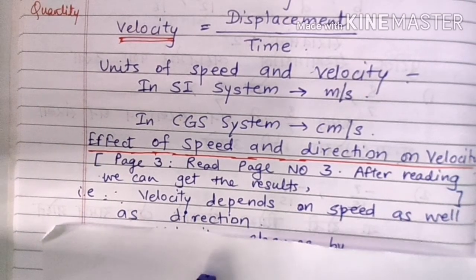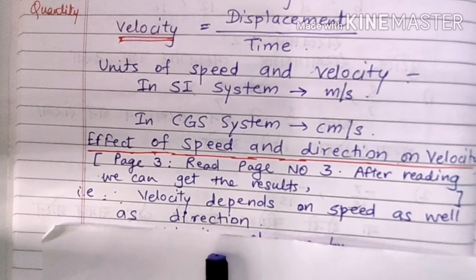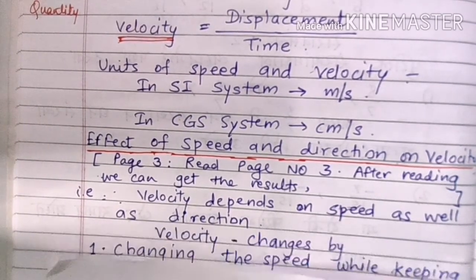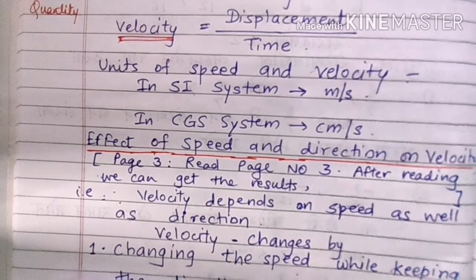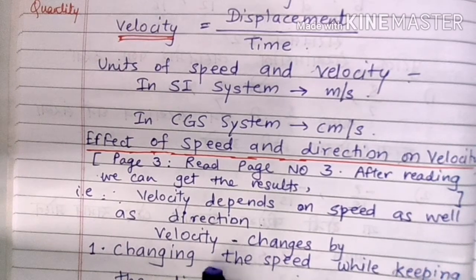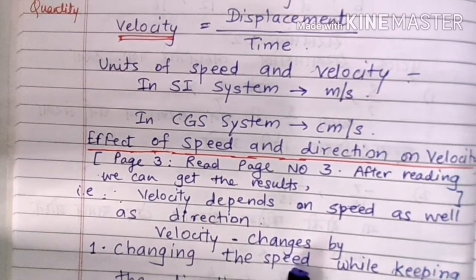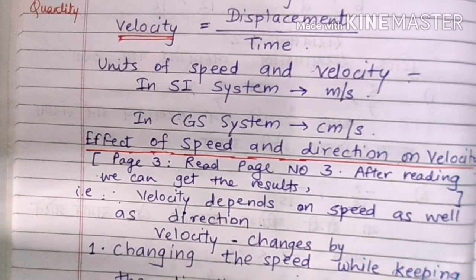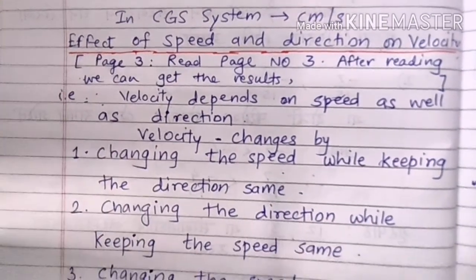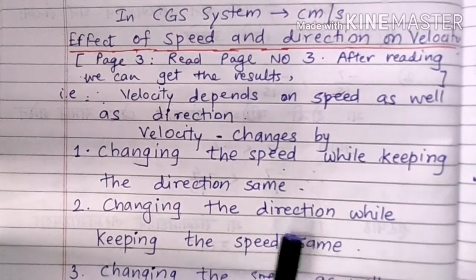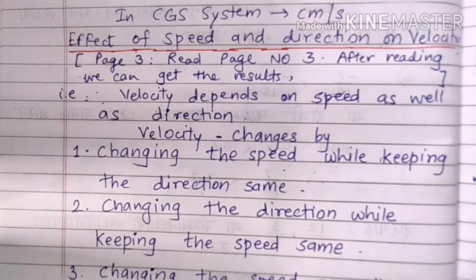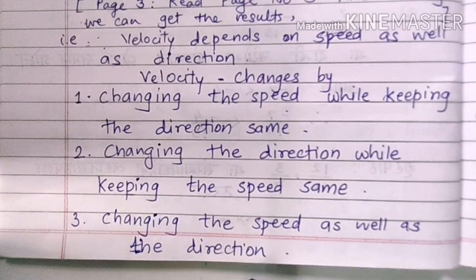The velocity depends on speed as well as direction. Velocity changes by changing the speed while keeping the direction the same. The second way is changing the direction while keeping the speed the same. The third way is changing the direction as well as the speed.